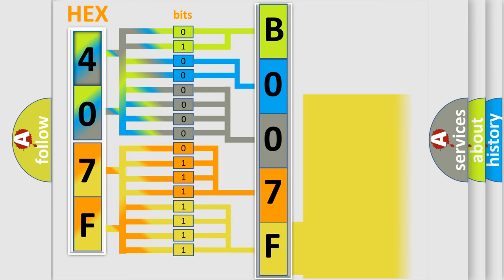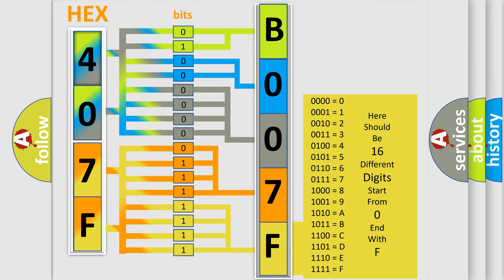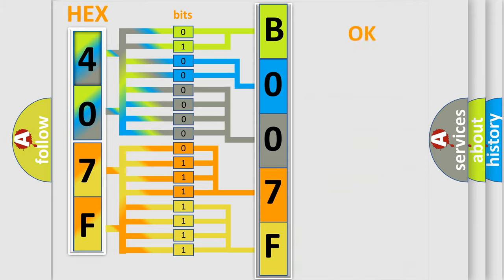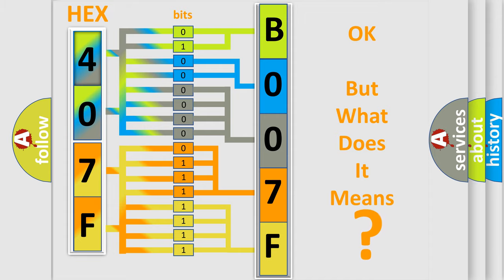So, what does the diagnostic trouble code B007F2B interpret specifically for Chrysler car manufacturers? The basic definition is No communication with instrument panel cluster. And now this is a short description of this DTC code.